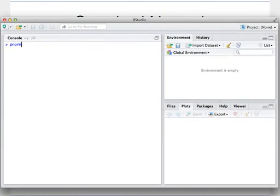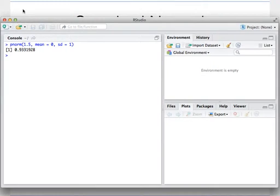So we have PNORM, 1.5, mean of 0, standard deviation of 1, and we find that the probability that a standard normal random variable is less than 1.5 is about .933.